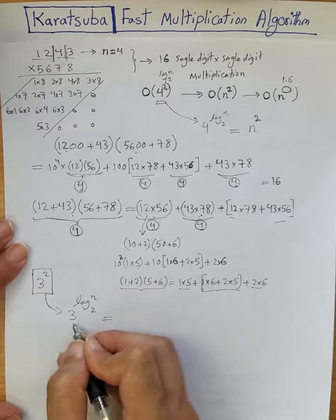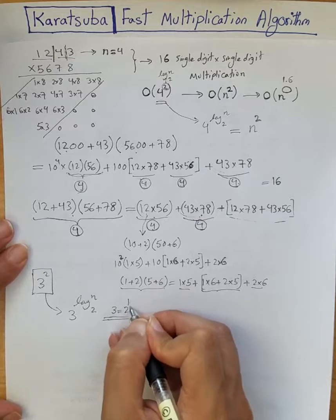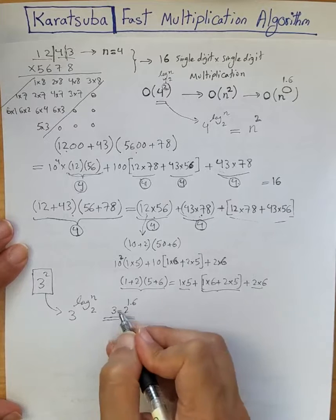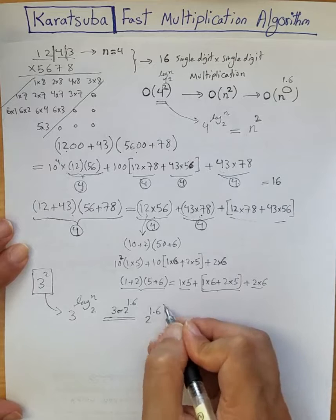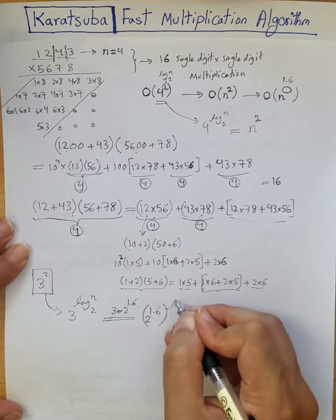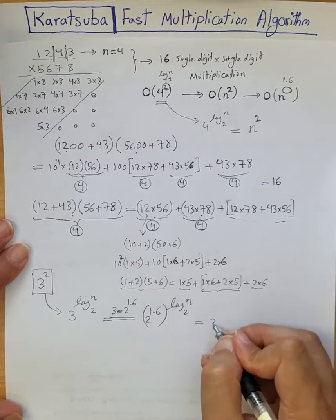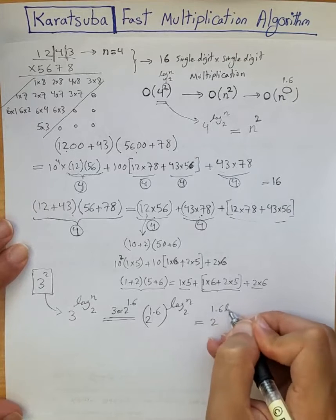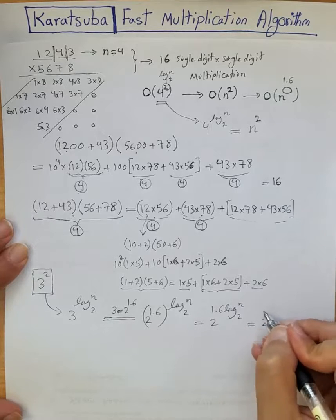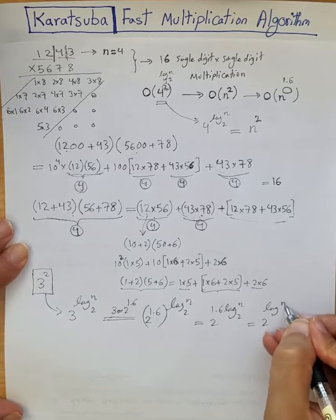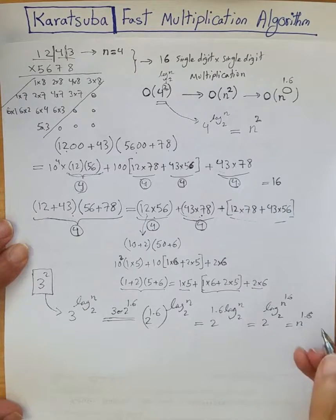In each step of the traditional method, you deal with 4 multiplications, giving 4^(log n base 2) = n². With Karatsuba, you deal with 3 multiplications per step, giving 3^(log n base 2). Since 3 ≈ 2^1.6, this equals 2^(1.6 · log n base 2) = (2^(log n base 2))^1.6 = n^1.6. So the complexity is reduced to O(n^1.6), a considerable improvement over O(n²).